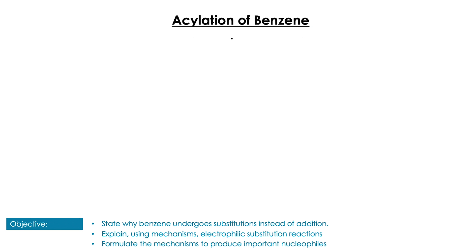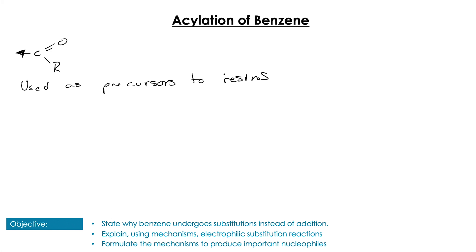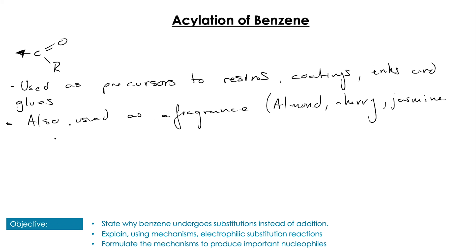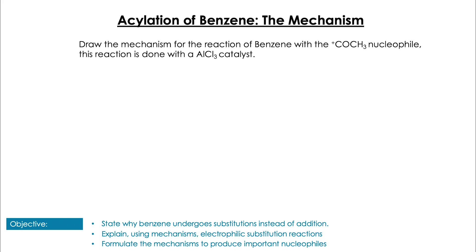For the acylation of benzene, we're trying to add this C=O-R group - CH3 as we looked at before - to the benzene ring. These are often used as precursors to resins, coatings and inks, dyes and glues. They're also used in fragrances, such as almond, cherry, jasmine, and strawberry fragrances, as well as others. It's also a key component in a lot of drug synthesis. Why don't you have a go at drawing the mechanism of this with the COCH3+ electrophile done with an AlCl3 catalyst - don't worry about the catalyst for the moment, we're going to look at that in a little while.